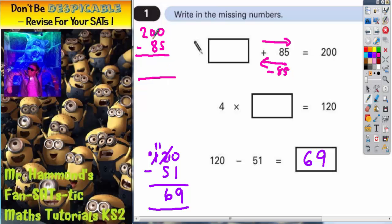So 200 take away 85. 0 take away 85, we can't do, so we need to borrow one from here, but we can't borrow one from here, so we have to borrow one from the 2 instead.